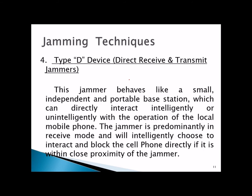Type D, direct receive and transmit jammers, behave like a small independent portable base station that can directly interact with the operation of the local mobile phone. The jammer is predominantly in receive mode and will intelligently choose to interact and block the cell phone directly if it is within close proximity of the jammer. It can directly receive and transmit the communication frequency and data.